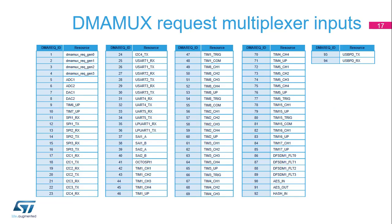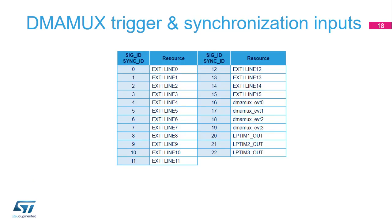This table shows the STM32L5 mapping of the DMA MUX request multiplexer inputs for any channel. Assigning a request input is programmed by the DMA REC ID for any DMA MUX request multiplexer channel X in the DMA MUX CX CR register; the same request input must not be mapped to two different channels. This table shows the STM32L5 mapping of the trigger inputs and synchronization inputs. Assigning a trigger input is programmed by the SIG ID field of any DMA MUX request generator X in DMA MUX RG X CR. Assigning a synchronization input is programmed by the SIG ID field of any DMA MUX request multiplexer channel X in DMA MUX CX CR.